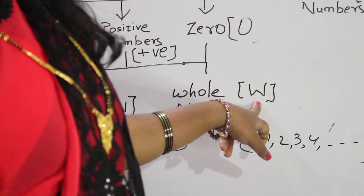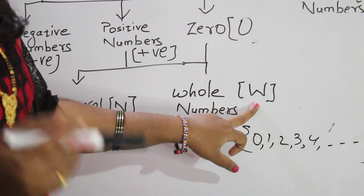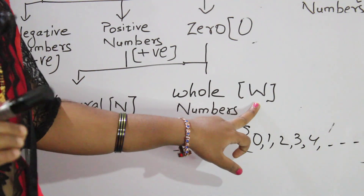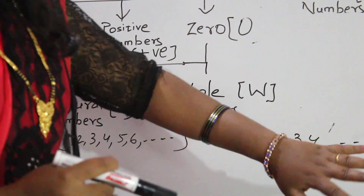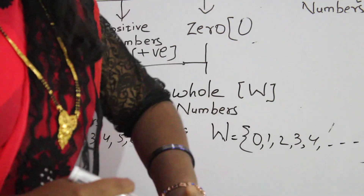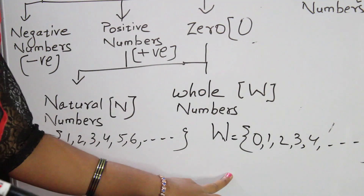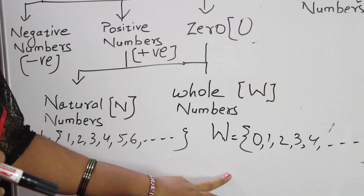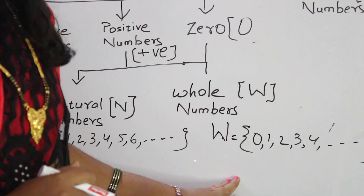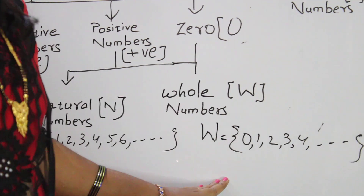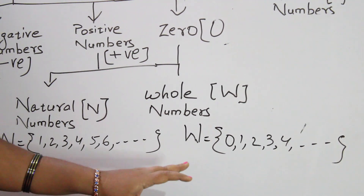Next, whole numbers. Whole number set is denoted by capital W. All the counting numbers start from 0: 0, 1, 2, 3, 4, 5 — these are all whole numbers. The smallest whole number is 0. Largest whole number cannot be determined. There are infinite whole numbers.